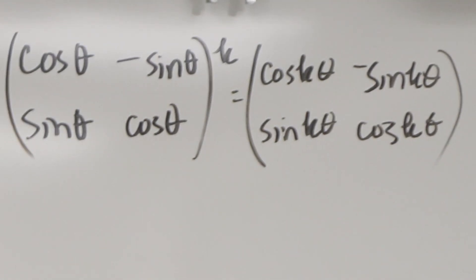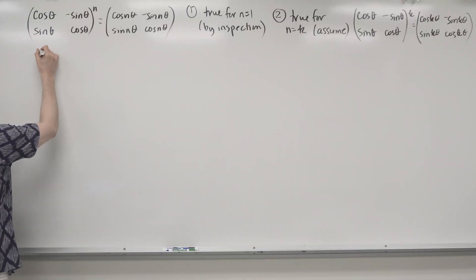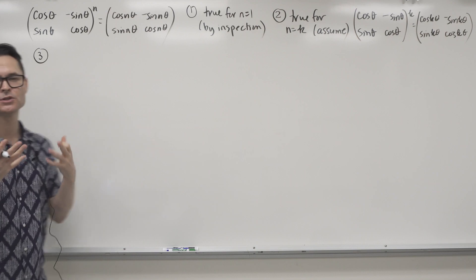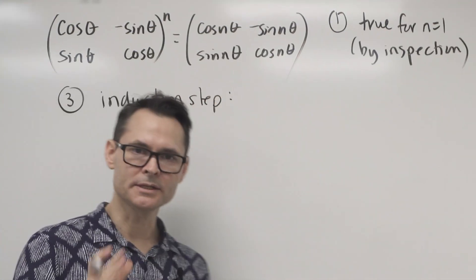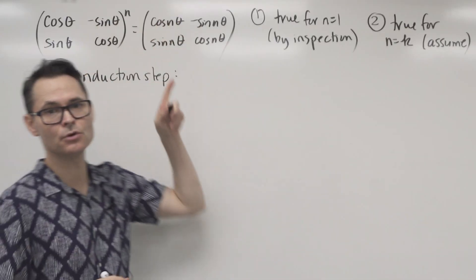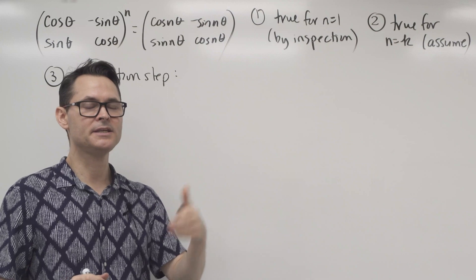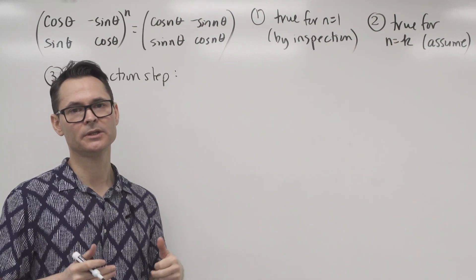So the third step is really where we get the juice. This is the induction step. Now listen to what this is saying. This is saying that we want to show that the statement is true for n equals k plus 1 whenever it's true for n equals k.